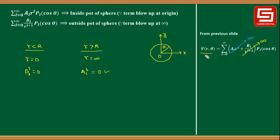This general expression is the solution in spherical coordinates when there is azimuthal symmetry — meaning the potential is independent of the azimuthal angle φ. The general solution covers both inside and outside. If we need to calculate inside potential, we use the A_l term; if outside, we use the B_l term. Let us understand this with the help of an example.